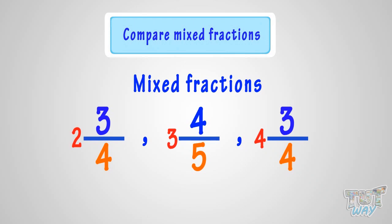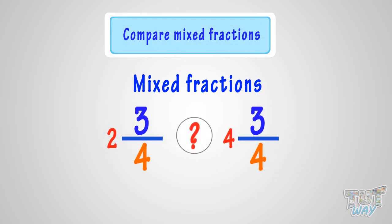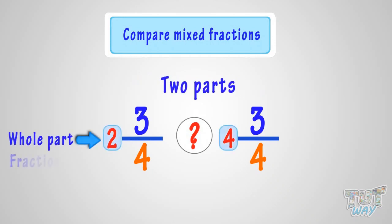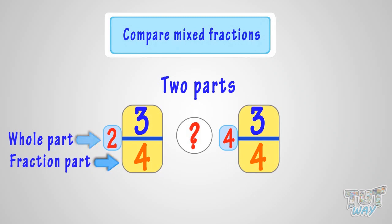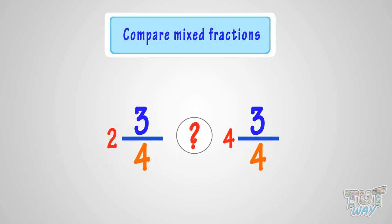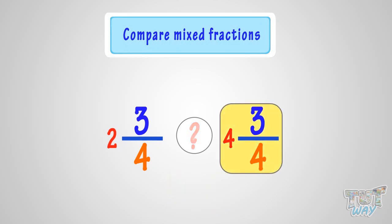For example, we have to compare these two mixed numbers. Mixed numbers have two parts: a whole part and a fraction part. First, we compare the whole parts. The mixed number with the bigger whole part is the bigger number. Here, in this example, the whole parts are different, and 4 is bigger than 2. So this mixed fraction is the bigger fraction.